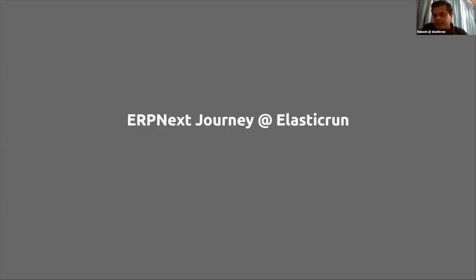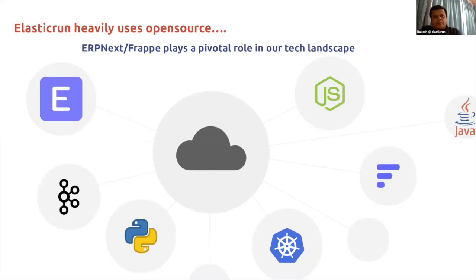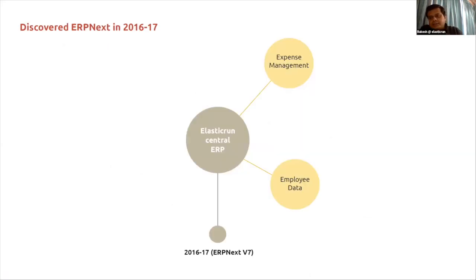Elastic Run is heavily dependent on open source. The major open source tools we use are ERPNext and Frappe. Apart from that, we use Kafka, Node.js, Java, Kubernetes, Docker, and databases including MySQL and PostgreSQL. Frappe and ERPNext have a major contribution in our journey, which started as we were evaluating products in the market.